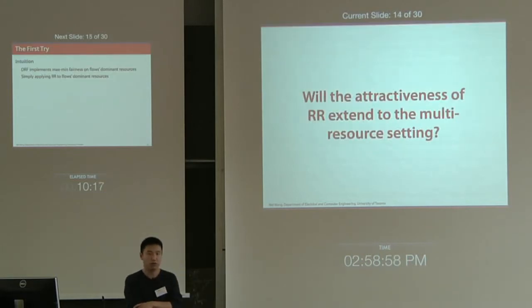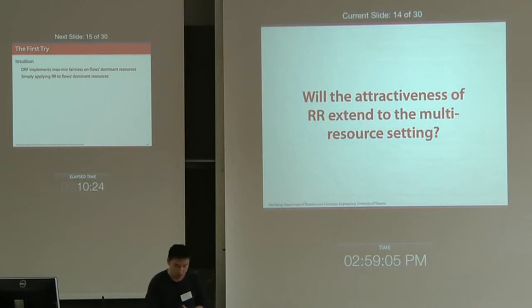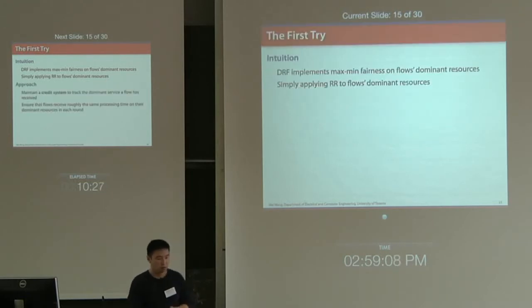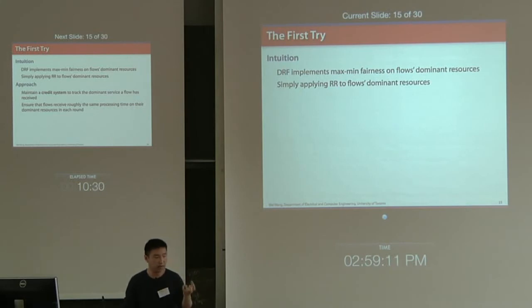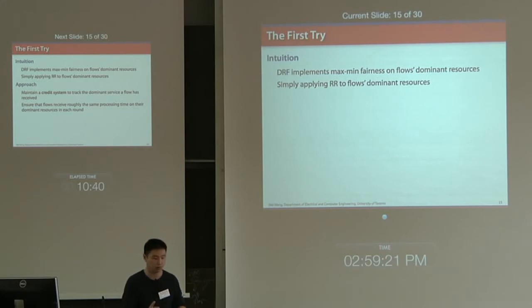The next question is: can we extend the attractiveness of round-robin to a multiple-resource setting? The intuition is that since DRF implements max-min fairness on flows' dominant resources, we may apply the round-robin idea to flows' dominant resources. The approach is to maintain a credit system to track the dominant service a flow has received, and ensure that during each round, flows receive roughly the same processing time on their dominant resources.